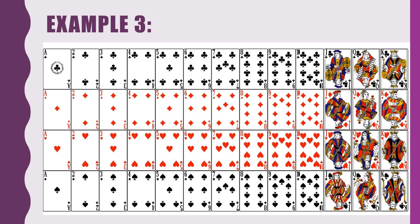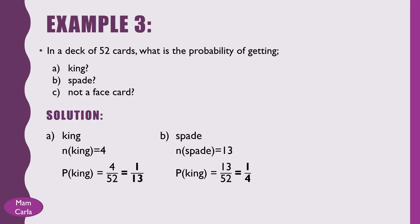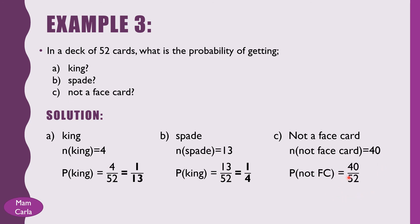For the next problem, we identify the probability of not getting a face card. The non-face cards are numbered 1 to 10 for each of the 4 suits, giving us 40 non-face cards. So the probability of getting a non-face card is 40 over 52, or simply 10/13.